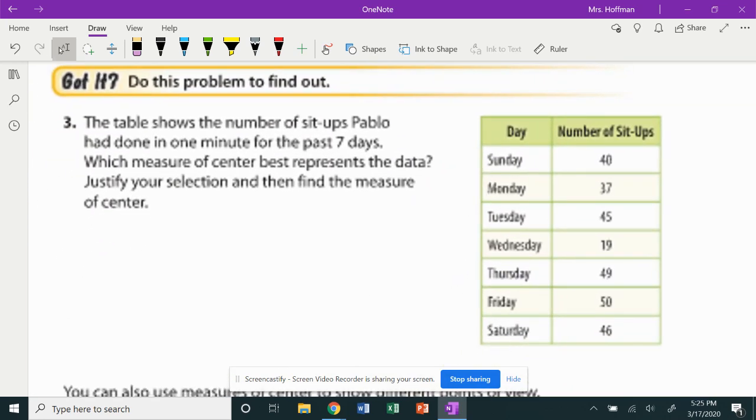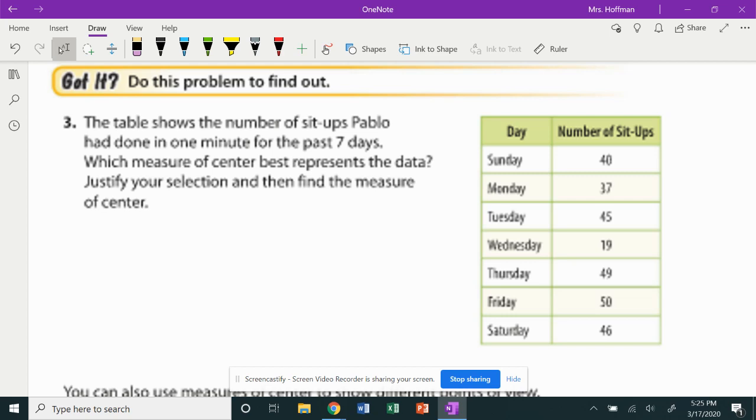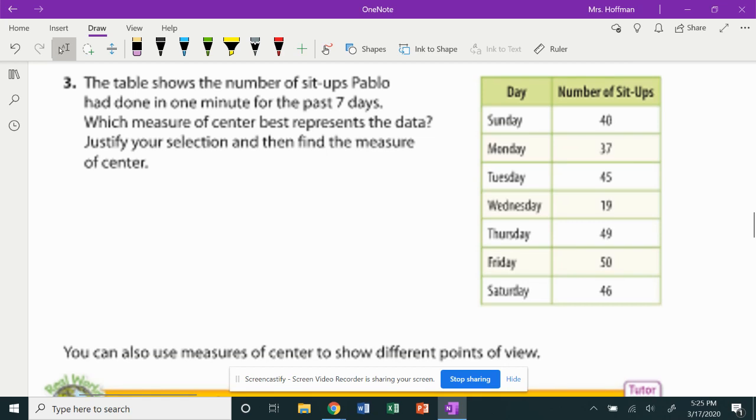Here we go. Pause if you need to. The table shows the number of sit-ups Pablo had done in one minute for the past seven days. Which measure of center best represents the data? Justify and find the measure of center. I'm going to do this the opposite way. We're going to find all three measures of center, because that's probably what I'll ask you to do.